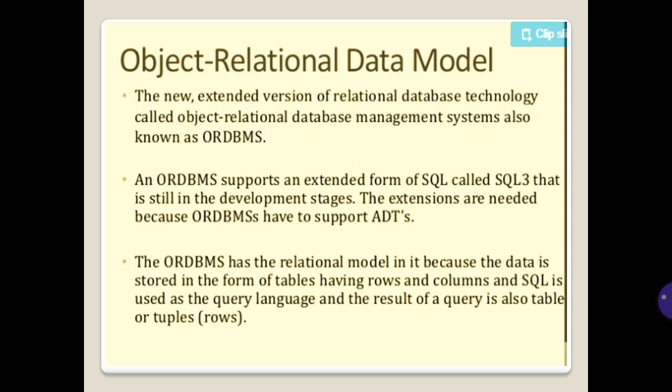The Object-Relational Data Model is a new extended version of relational database technology called the Object-Relational Database Management System (ORDBMS). An ORDBMS supports an extended form of SQL called SQL3, which is still in development. Extensions are needed because ORDBMS must support Abstract Data Types (ADTs). The ORDBMS retains a relational model where data is stored in tables with rows and columns, SQL is used as a query language, and query results are also tables or tuples.